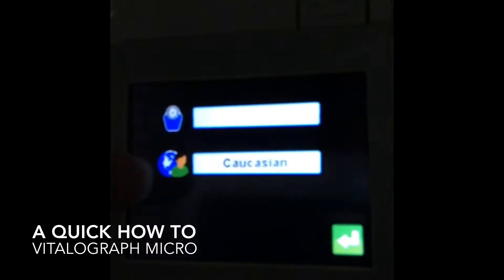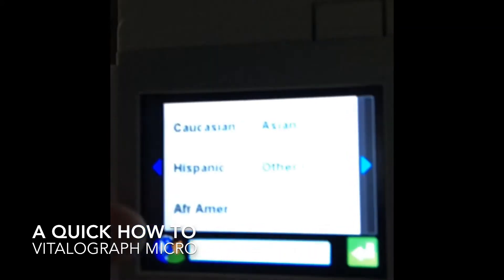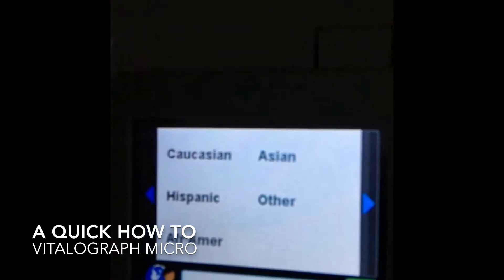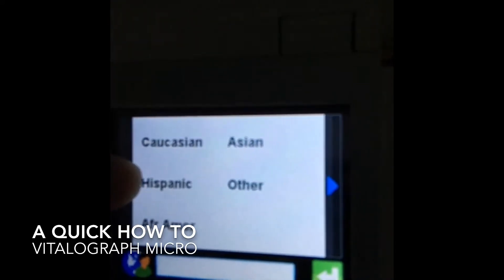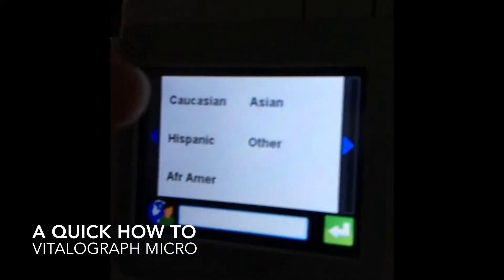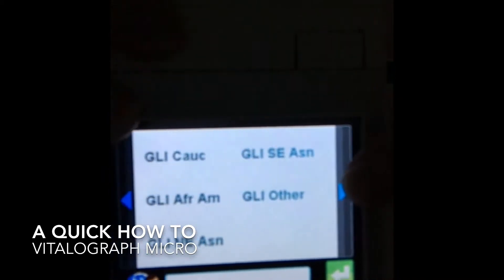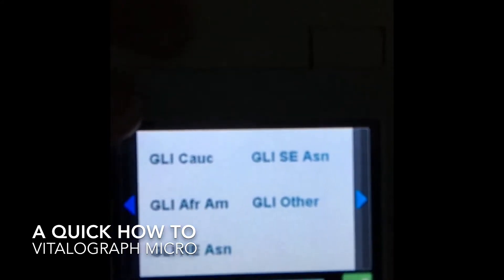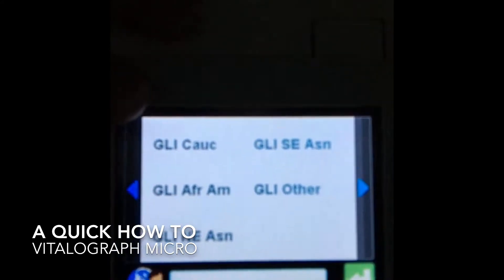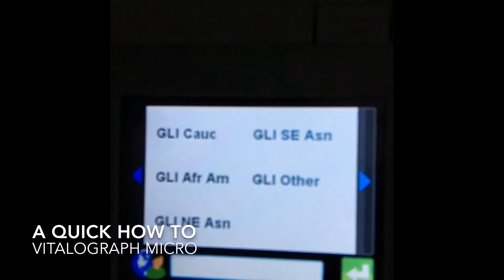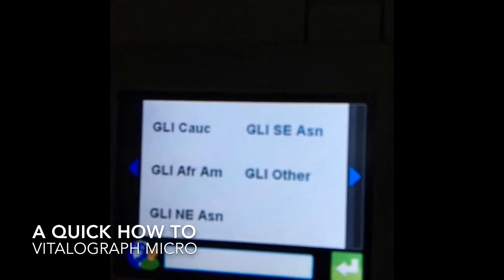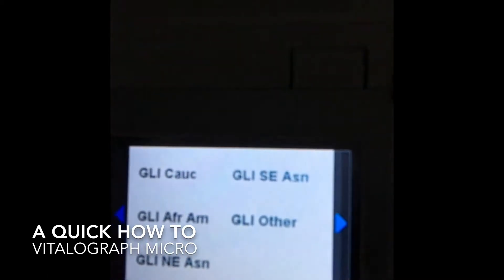Now, to choose your regression set, you can simply tap on this button here. If you select anything in this category, you're going to be utilizing the NHANES regression equation, or we can click over on the other side here, and this is where you select the GLI equation. This is really the most accurate, and it goes down from age 3 up to 95, so I would recommend using the GLI over the NHANES.